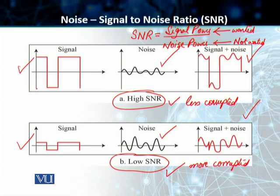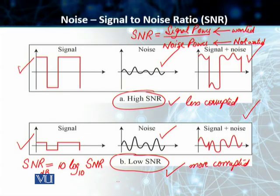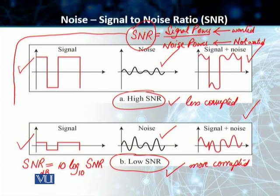Before we leave this SNR topic, we need to find out how to calculate SNR. Because SNR is a ratio of two powers, we represent it using the units of decibels. So SNR in dB is equal to 10 log to the base 10 of the actual ratio that you have calculated. This signal-to-noise ratio needs to be converted into decibels using this formula.